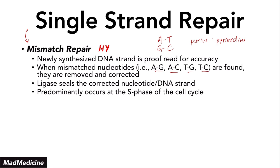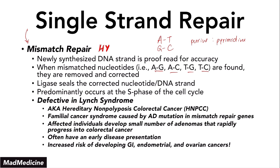That syndrome is called Lynch syndrome. Lynch syndrome occurs when you have a defect in mismatch repair. It is also known as hereditary non-polyposis colorectal cancer, or HNPCC. This is a familial cancer syndrome caused by an autosomal dominant mutation in the mismatch repair genes — you are not able to repair mismatched DNA strands. Affected individuals develop a small number of adenomas that rapidly progress into colorectal cancer, and importantly, there will not be polyps.